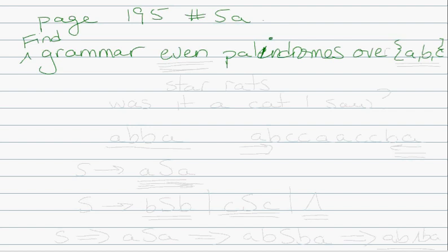Palindromes are generally words that read the same forwards and backwards. For example, 'star rats' is a palindrome if we ignore the spaces, or here's a fun one: 'was it a cat I saw?' — if we ignore the punctuation and spaces, that's a palindrome. In this case, we just need palindromes over the alphabet A, B, C, and they have to be even in length.